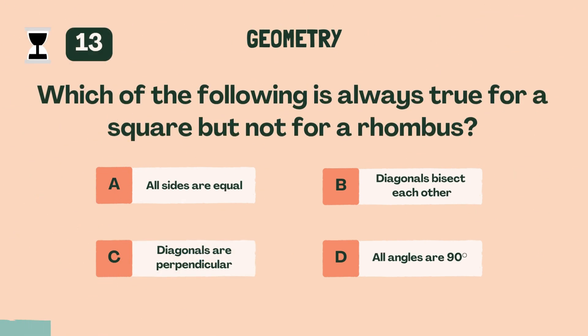Which of the following is always true for a square but not for a rhombus? D, all angles are 90 degrees.